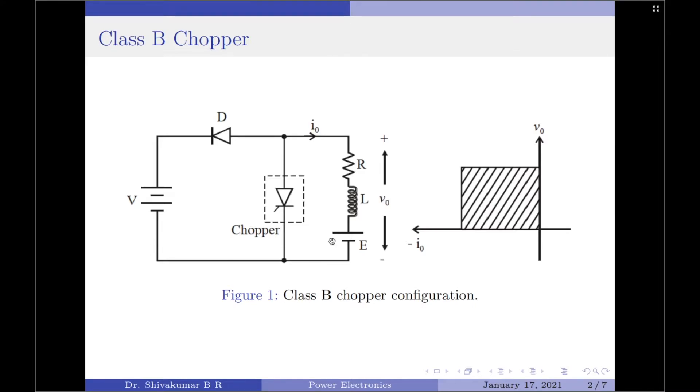However, the DC source at the load E drives the current through inductor L and the chopper. So there is a closed loop here. The inductor L stores the energy during this period. Since the inductor current direction is opposite to the load current direction, load current is denoted by I0 here. We regard the inductor current to be negative as it is flowing out of the load.